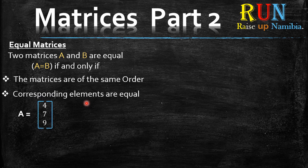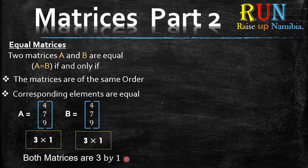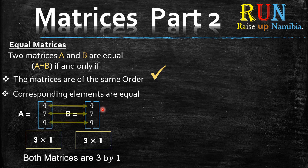So we have matrix A over here and we have another matrix B. Let's see if they fulfill the properties of being equal. Property number 1 is that the matrices should be of the same order. A is a 3 by 1, and B is also a 3 by 1, meaning both matrices are 3 by 1, so yes, they are of the same order. Now how about the corresponding elements? When we look at A, the first element is a 4 — and in B it's also a 4 — then the 7, the 9. So all corresponding elements are equal, meaning these are two equal matrices.